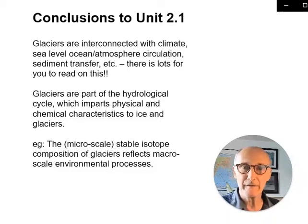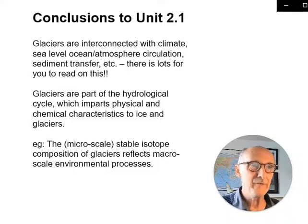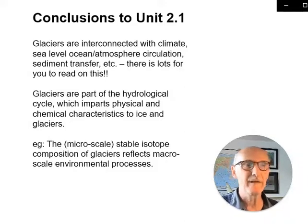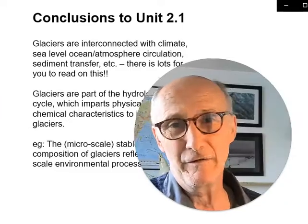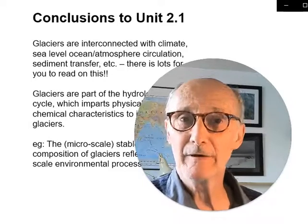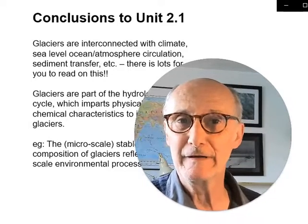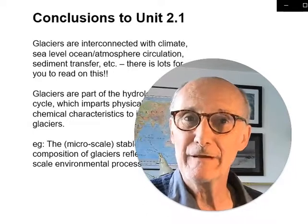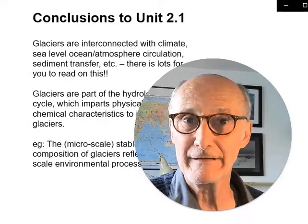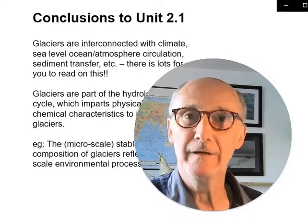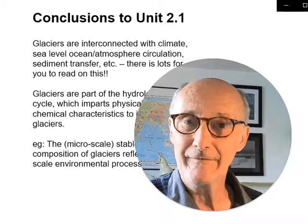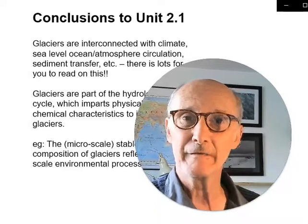One example you'll be exploring in the accompanying video is that the micro-scale stable isotope composition — the atomic-scale composition of ice — reflects big processes happening in the global system. Go and look at three videos alongside this one: an exploration of the Yukon River and how sediment transfer along the river and into the delta is associated with glacial activity; another about glaciers and the hydrological cycle; and a third about stable isotopes in glaciology. Those three mini videos will complete this unit 2.1.